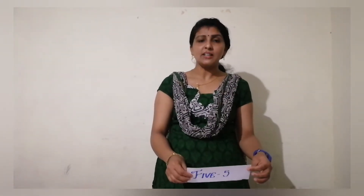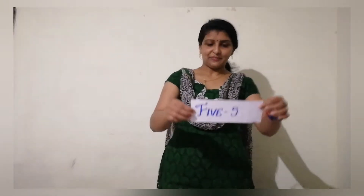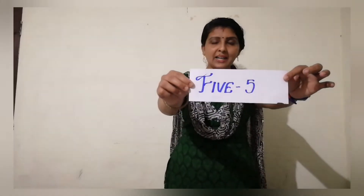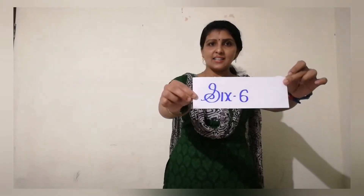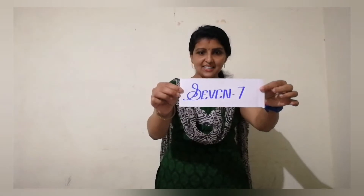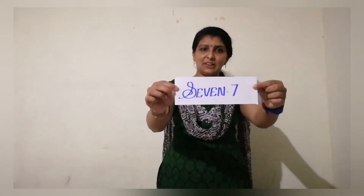Everybody knows these names, but after completing the lesson we have to take our revision. So you have to say: what is the number? 5: F, I, V, E. Very good. Then the next number, 6: S, I, X. 6. The next — which number is next? 7. Can you say the spelling? S, E, V, E, N. 7.